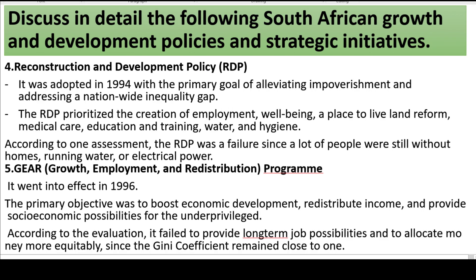4. Reconstruction and Development Policy (RDP). It was adopted in 1994 with the primary goal of alleviating impoverishment and addressing a nationwide inequality gap. The RDP prioritized the creation of employment, well-being, land reform, medical care, education and training, water, and hygiene. According to one assessment, the RDP was a failure since a lot of people were still without homes, running water, or electrical power.